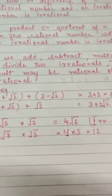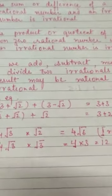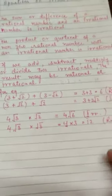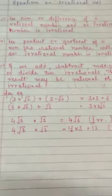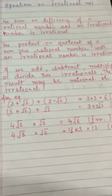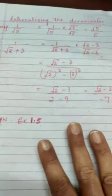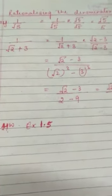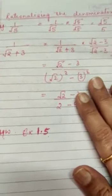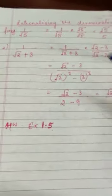These concepts are applied to find whether the given expression is a rational or irrational number, and also we use these to rationalize the denominators. For example, we have the number 1 by root 5.